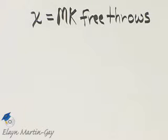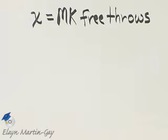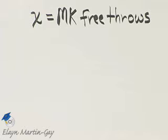Let's go through our steps as we solve this application. First, make sure you read and reread the problem — we're trying to understand the problem. And part of that: we'll let X represent an unknown. We're going to let X represent Maria Kaminsky's free throws.